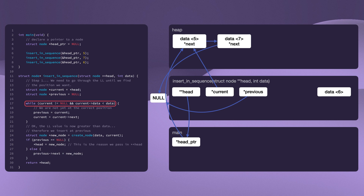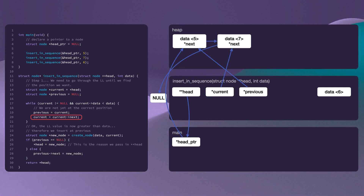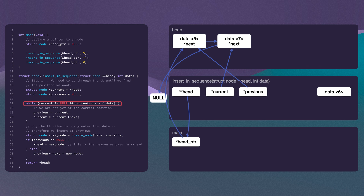We then have to loop through until we find the position to add the node. Is current equal to null? No, it's not. And is five — the value that current is pointing to — less than six, the element that we want to add? This is true. So it's time to iterate through our linked list. The previous pointer is going to be assigned to where current is currently pointing, and then current is going to shift forward and follow the next pointer of where it was pointing. So now it will point to the node with the value seven. Current is not pointing to null — it's now pointing to the second value in the linked list. However, the value stored in the node with the value of seven is not less than data six, so we've actually found the position in which we need to insert our node. It's going to go in between current and previous.